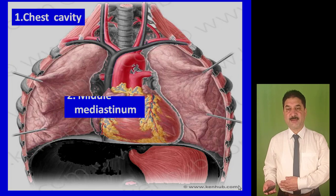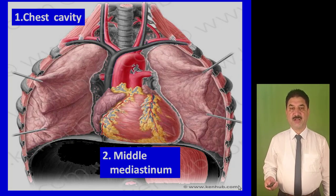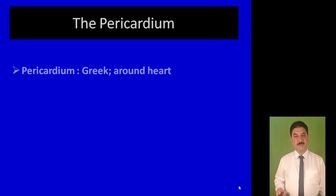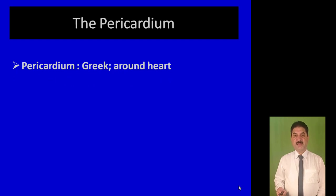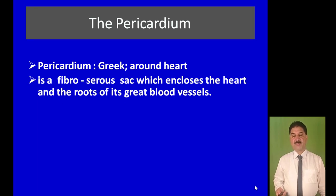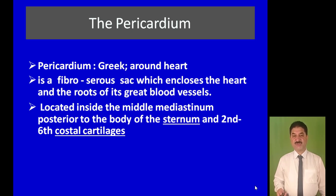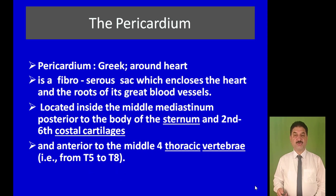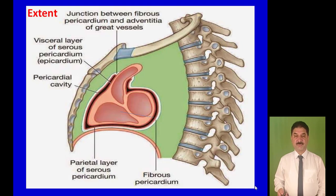Let us go to this diagram to visualize the anatomical position of the heart. The heart lies in the chest cavity, placed by nature in the middle mediastinum, and it is covered by the pericardium which protects it. The pericardium is derived from the Greek word meaning 'around the heart.' It is located inside the middle mediastinum, posterior to the body of the sternum and second to sixth costal cartilages.